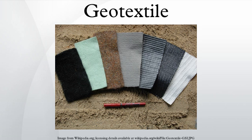Geotextiles are also used for sand dune armoring to protect upland coastal property from storm surge, wave action, and flooding. A large sand-filled container within the dune system prevents storm erosion from proceeding beyond the structure. Using a sloped unit rather than a single tube eliminates damaging scour, and sloped step shapes are effective at mitigating shoreline erosion damage from storms.